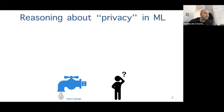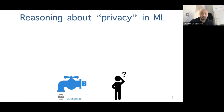I'll start by not necessarily defining privacy in machine learning — any attempt to define privacy overall tends to be a moot point. But we can think about privacy as leakage of sensitive information that might come from having access to a machine learning model. There's a lot of security and privacy attacks you might think of, but I'm going to focus on leakage of sensitive information from training data, where an adversary gets that information from having access to a model.